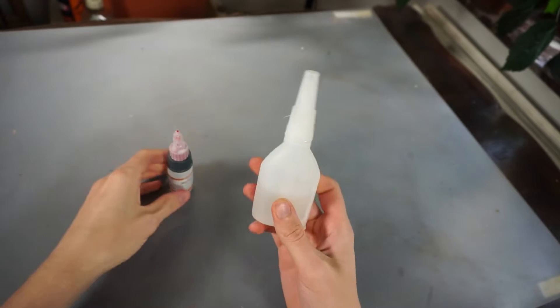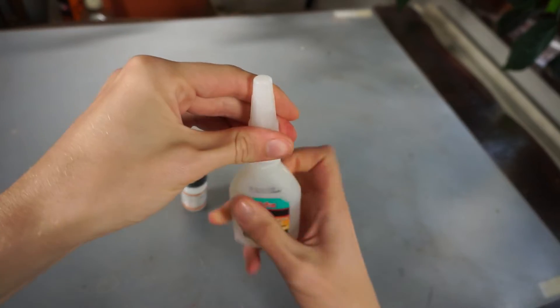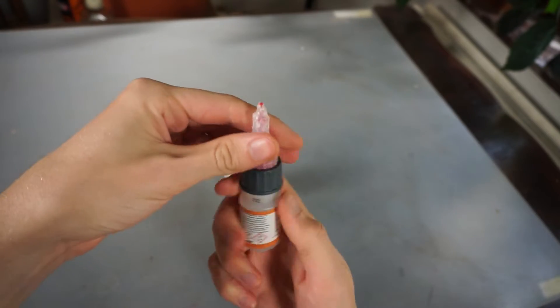What's great about CA glue is that you can mix them together, meaning that if we now take this thick one and add some drops of the thinner one into it.